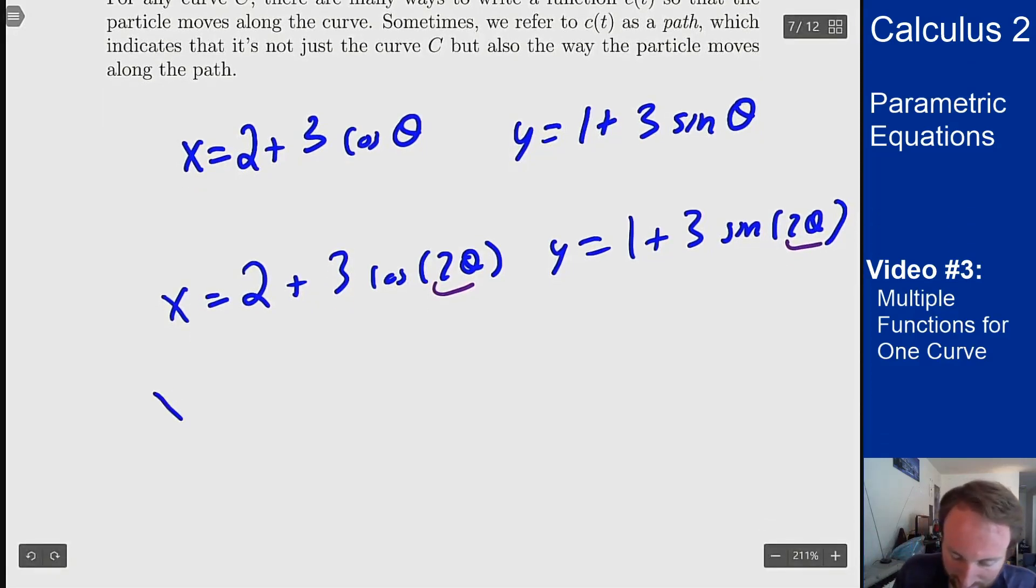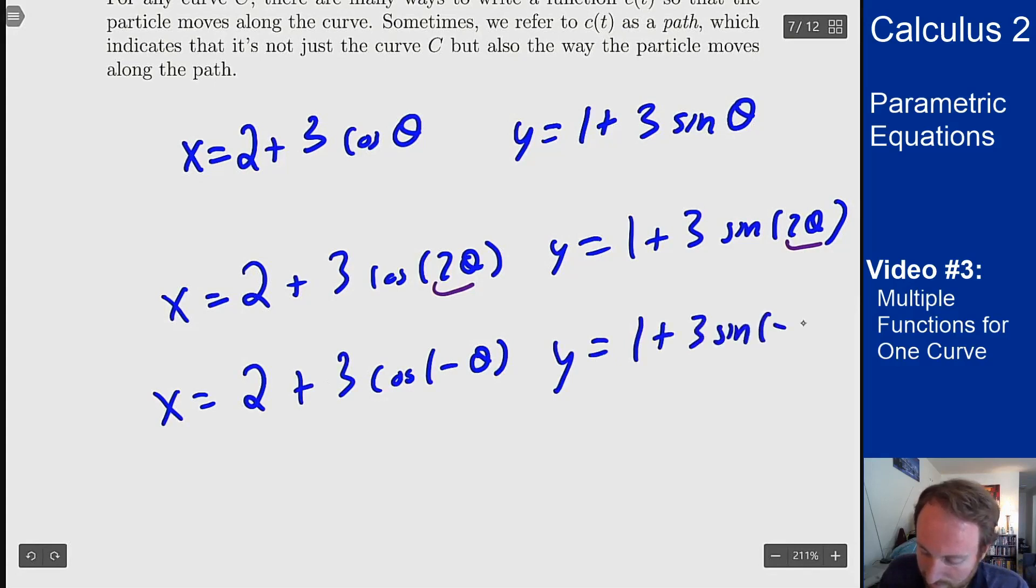I can also look at x = 2 + 3 cos(-θ) and y = 1 + 3 sin(-θ). Again, same curve, but now I'm going the opposite direction—instead of counterclockwise, I'm going clockwise around this curve.